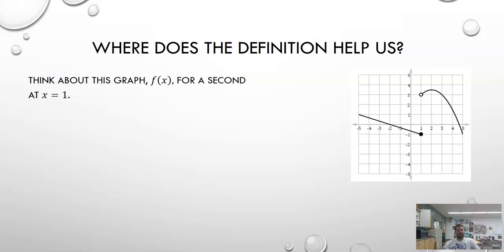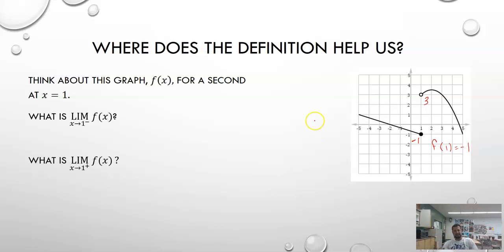If I look at a graph like this, we can see that there's a jump at x equals 1. The left-handed limit is negative 1, the right-handed limit is positive 3, and the function value f(1) equals negative 1. The limit as x approaches 1 from the left is negative 1, from the right is 3, and f(1) is negative 1. Notice those three numbers are not all the same, which means the function is not continuous at that point because those three numbers don't match up.